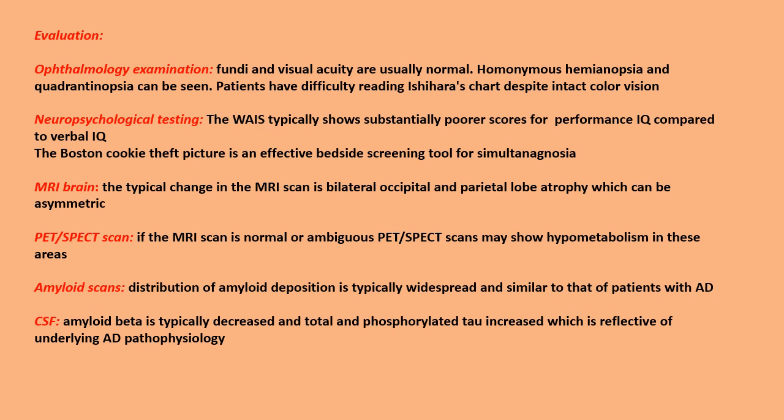On MRI brain, the typical finding is bilateral occipital and parietal lobe atrophy, which can be asymmetric. PET or SPECT scan can show hypometabolism in these areas. Amyloid scans show widespread amyloid deposition, similar to typical Alzheimer's disease, not focal. CSF amyloid beta is typically decreased, and total and phosphorylated tau are increased, reflecting the underlying AD pathophysiology.